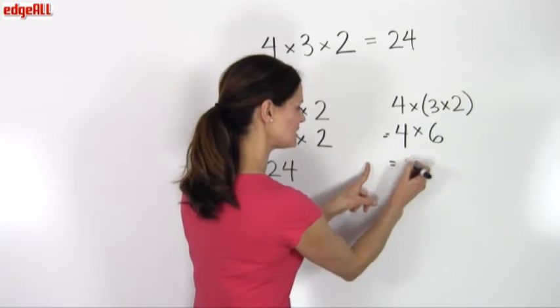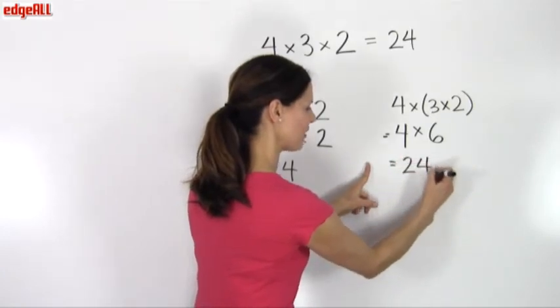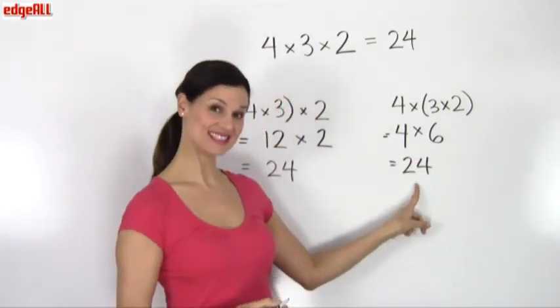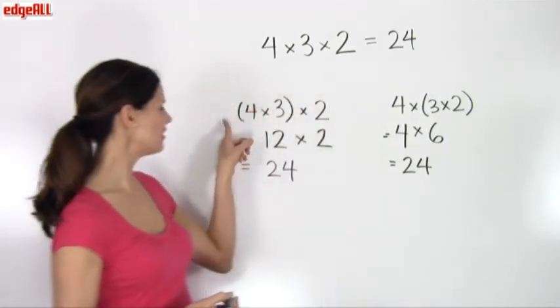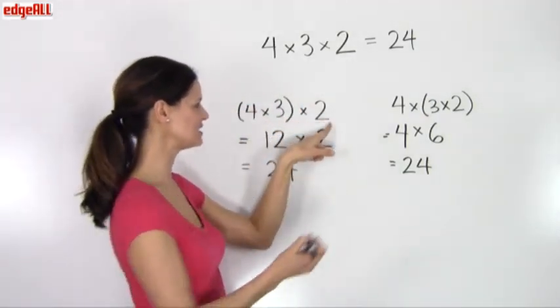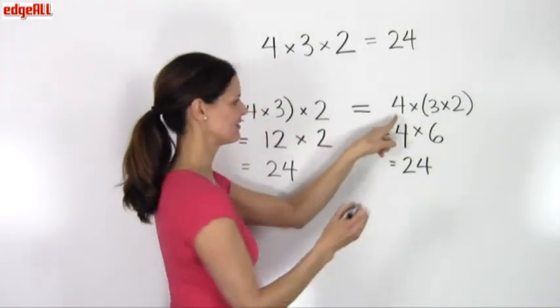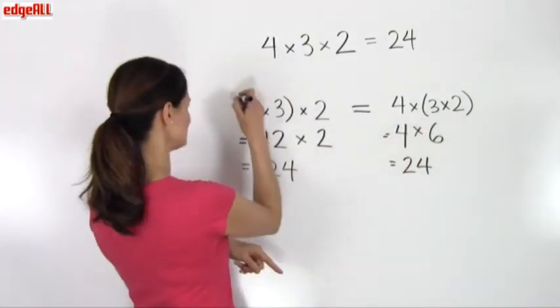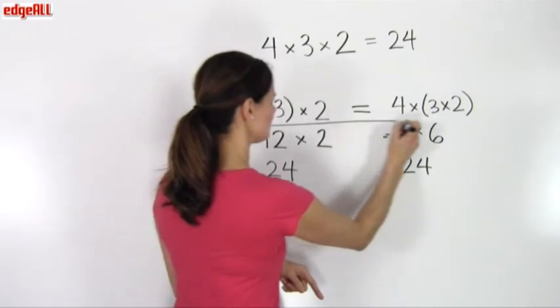So we can see that both this 4 times 3 with the parentheses around it times 2, and this 4 times 3 times 2 are equal to one another.